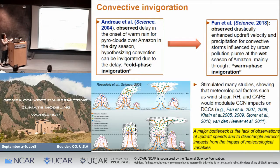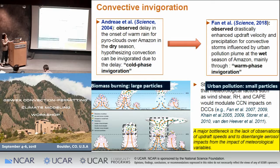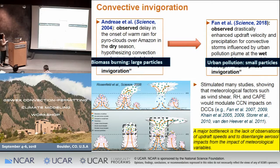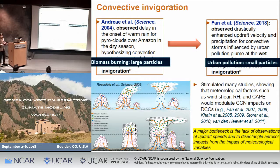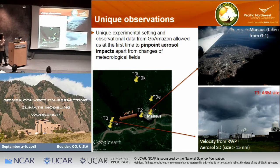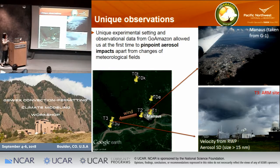We look at what we call warm phase invigoration, which I will detail later. I want to emphasize that the particles are different here. Previously, cold phase invigoration mostly applied to CCN — the larger particles that can be activated at the cloud base. Our warm phase invigoration mostly applies to pollution particles from over cities, where the particles are very small and cannot be activated at the cloud base. We have this unique field campaign from the Amazon providing this unique dataset, allowing us to look at the aerosol impact on convective intensity and also pinpoint the aerosol impact apart from changes in meteorological fields.